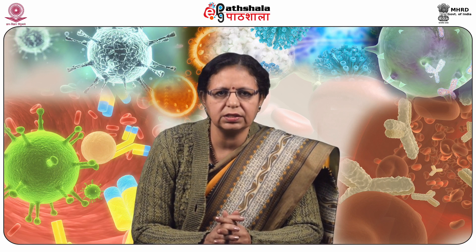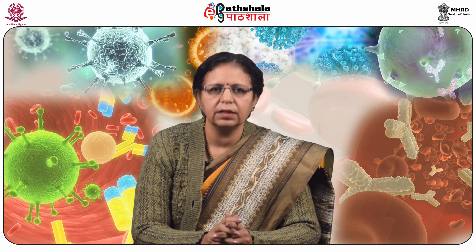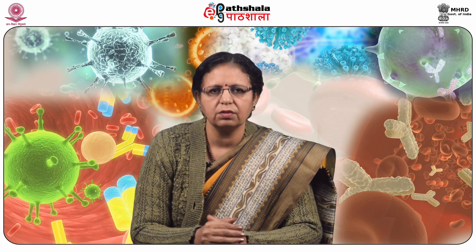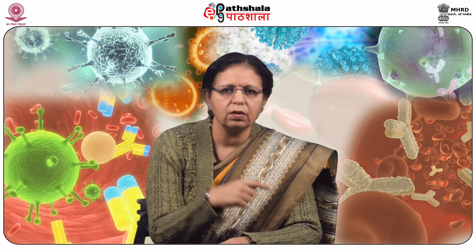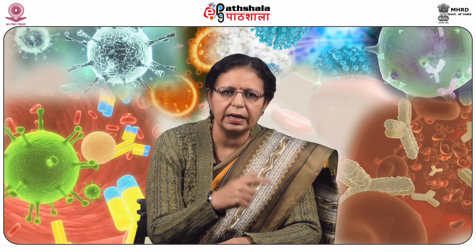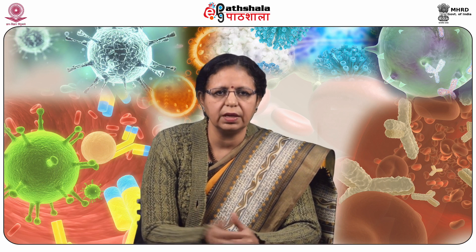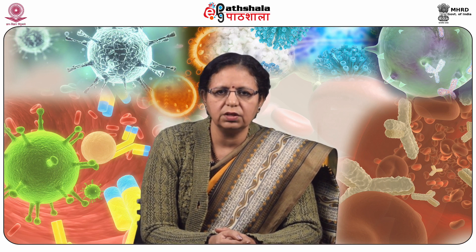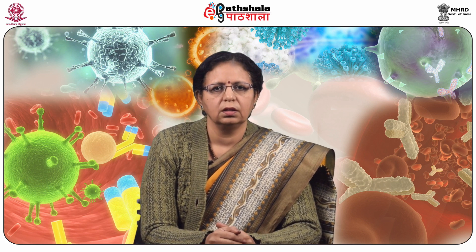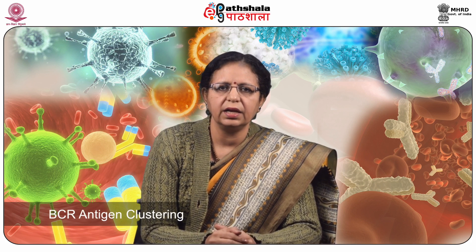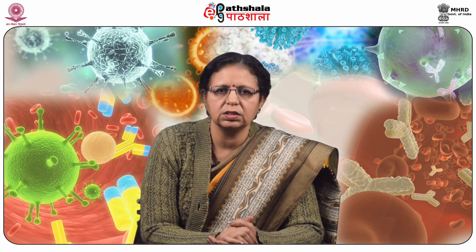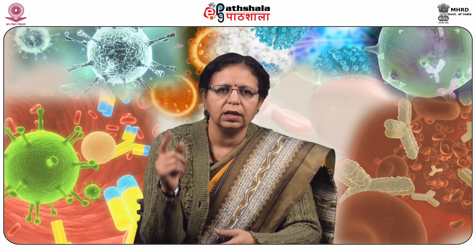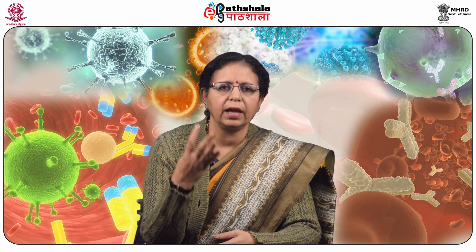BCR-antigen clustering is a very important step for antigen recognition, made possible by multivalent antigens. BCR recognizes epitopes with properties including: identical or non-identical chemical structures; repeating or non-repeating epitopes meaning regularly spaced identical or different types; overlapping or non-overlapping meaning closely or distantly spaced; and conformational or non-conformational meaning three-dimensional or linear epitopes. These epitope properties are important for BCR-antigen clustering.